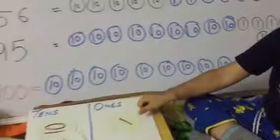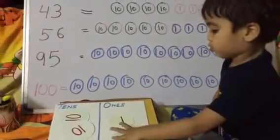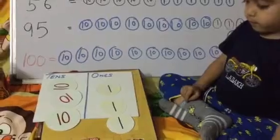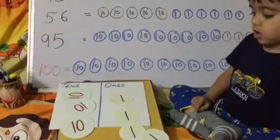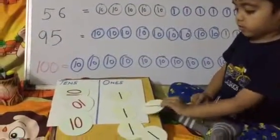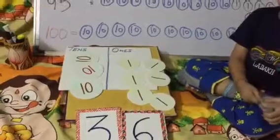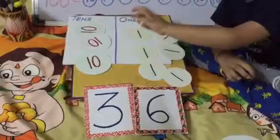Six ones. One. One. Two. Three. Four, and five, and six. How many tens? Thirty-six. Very good. How many tens in thirty-six? Three, and one, six. Very good. Excellent.